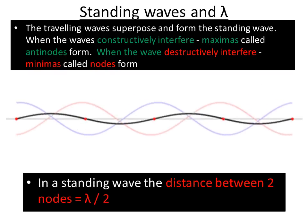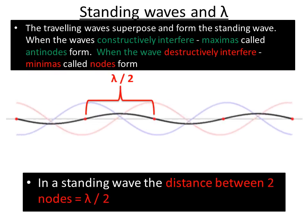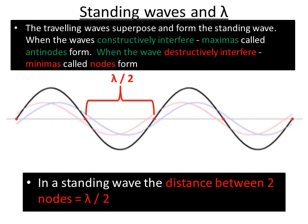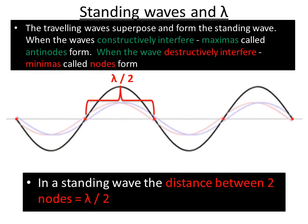Interestingly enough, the distance between two nodes is equal to half a wavelength. So the distance between three nodes is the wavelength on a standing wave.